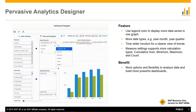We have also added additional data types to help you review data in more detail. We now have a time slider function which allows a user to select the exact timeframe you would like to analyse your data across. And more calculation types can now allow you to display not only the original values but also calculated values, such as cumulative sums or averages.